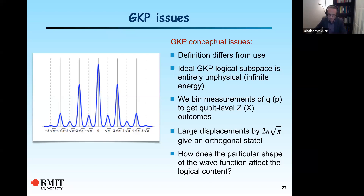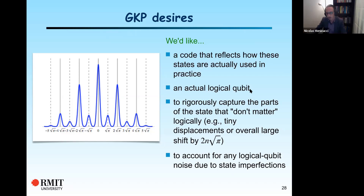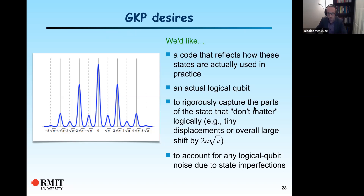We'd like a code that reflects how these states are actually used in practice. We would like an actual logical qubit, at least in our description, and to rigorously capture the parts of the state that don't matter logically — for instance, tiny displacements or an overall large shift by some even multiple of root-pi. We would like to account for any logical qubit noise due to state imperfections, and put it into the language we like: quantum channels, logical qubits, and decoherence.